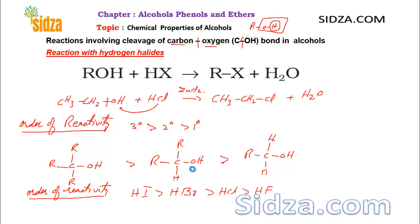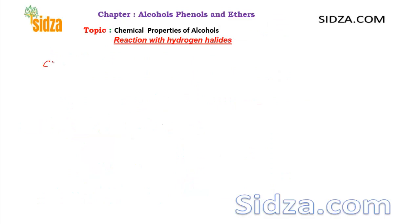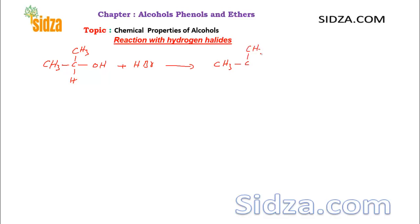Now let's take an example. If you have a molecule like CH₃CH(CH₃)OH — a secondary alcohol — and react it with HBr, what do you get? The hydroxyl is replaced by bromine, so you get CH₃CHBrCH₃ plus water.